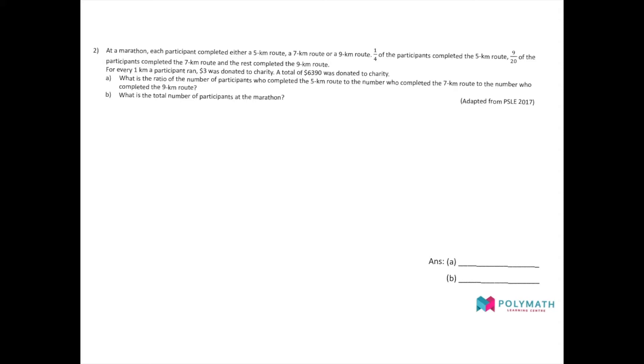What is the ratio of the number of participants who completed the 5km route to the number who completed the 7km route to the number who completed the 9km route? And B, what is the total number of participants at the marathon?